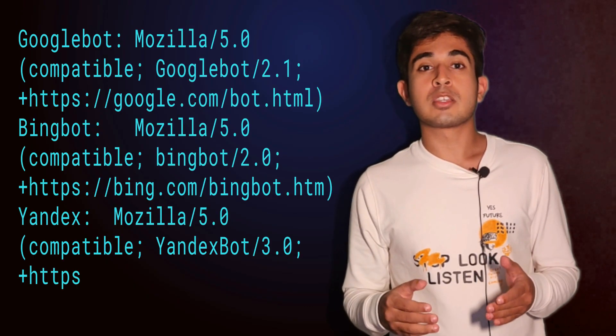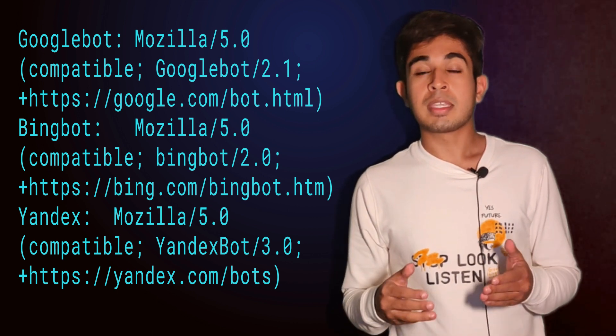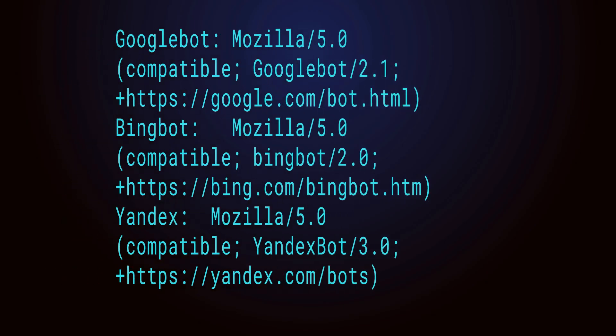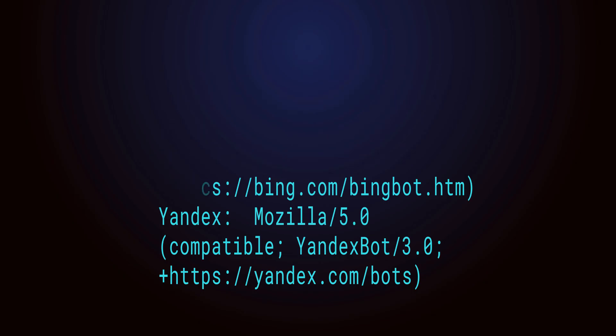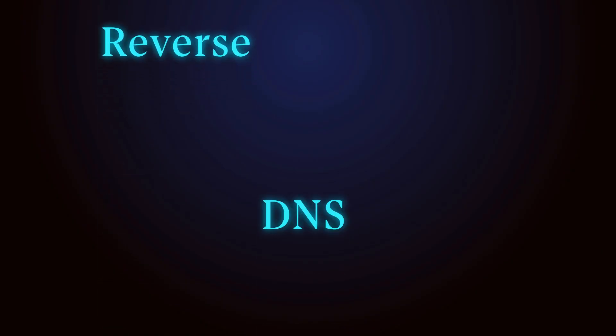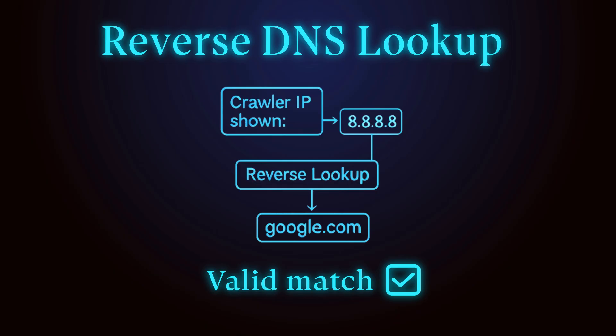But how do we know which crawler is crawling through a website? Every crawler identifies itself with a user agent string — a unique ID or passkey that it passes to the server. But these IDs can be faked; anyone can pretend to be Googlebot. So to tell the real ones from imposters, we use a reverse DNS lookup. If the crawler claims to be from Google, the IP address should resolve back to google.com.